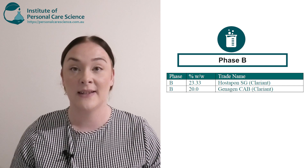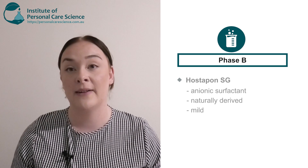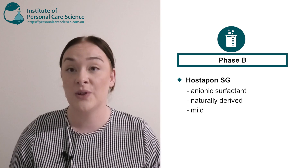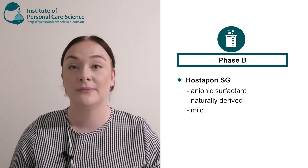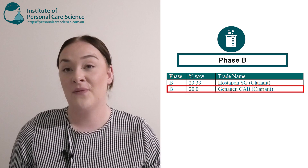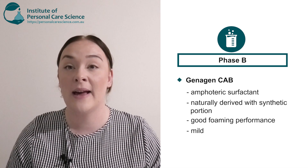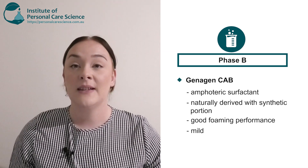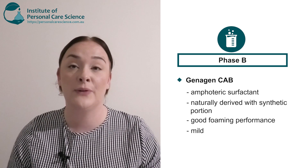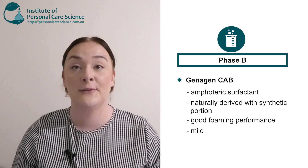Next are my anionic and amphoteric surfactants. I've chosen to go with the Hossapon SG as my anionic surfactant by Clarion, because it's naturally derived and also very mild. Next I've chosen Genogen CAB as my amphoteric surfactant, also by Clarion. This is naturally derived with a synthetic portion, but it has really good foaming properties and it's really mild.